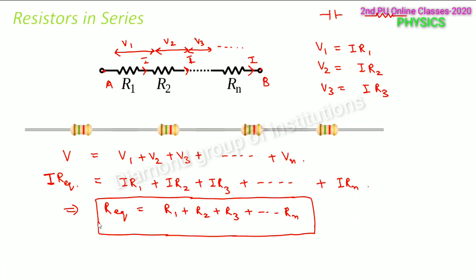Note that this is opposite to capacitors. In the case of capacitors connected in parallel, the equivalent capacitance equals the sum of individual capacitances. So this is a major difference between resistors and capacitors — please do not get confused.